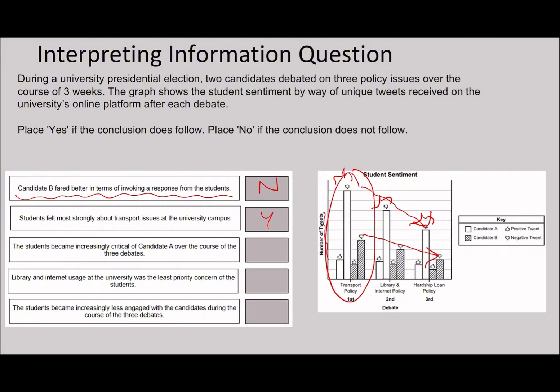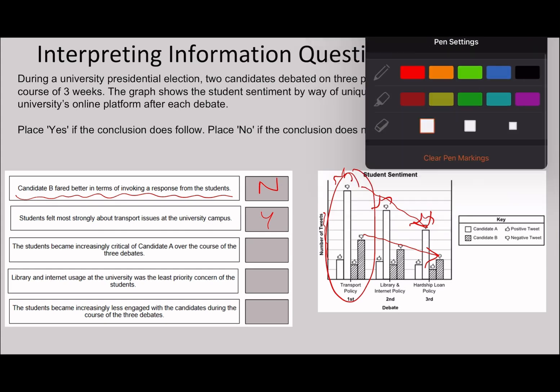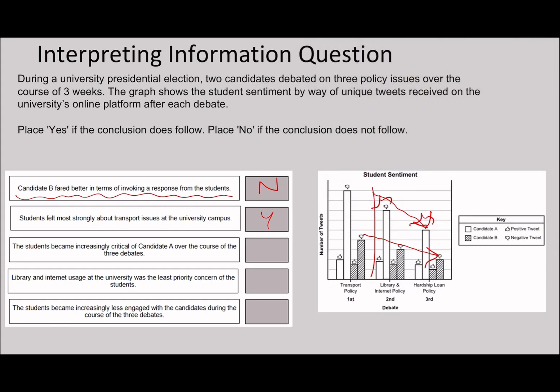Once again, you can do the exact numbers if you really want to do the calculation, but remember eyeballing is a really useful skill. Students became increasingly critical of candidate A over the course of the three debates. You can see the thumbs up slightly decreases and the thumbs down decreases by quite a lot. So I would argue no for this because I don't think they become increasingly critical; in fact, they decrease their criticalness.